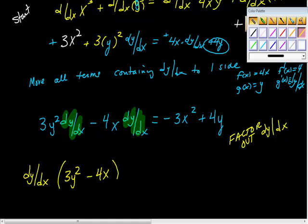And if I distributed this dy/dx back in, I'd get all this crap back, wouldn't I? It's equal to negative 3x² plus 4y.